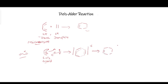It's a 4+2 cycloaddition reaction. The diene has four pi electrons and the dienophile has two pi electrons involved in this reaction. The sigma electrons are not part of this reaction — only the pi electrons move, which is why it is known as a 4+2 cycloaddition reaction.